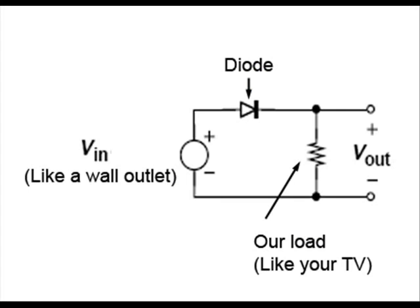A simple rectifier can be made by putting a diode between an AC source and the device it will power. This is a half-wave rectifier. The AC voltage source on the left is like the power company. The diode does the rectifying, and the resistor is how we represent the device we want to power. Sometimes, this is called the load.